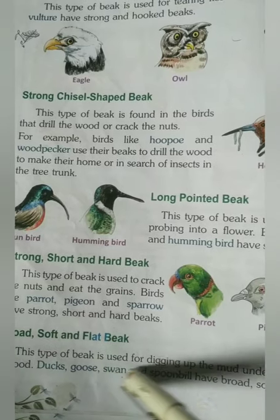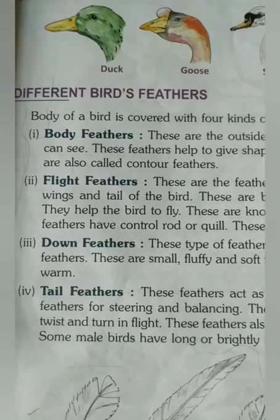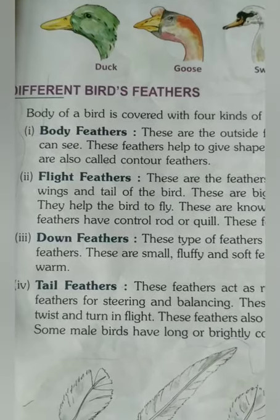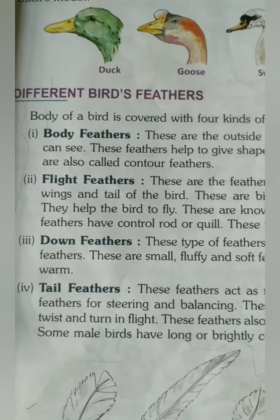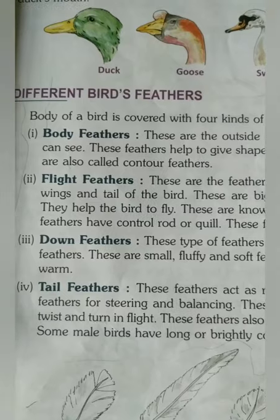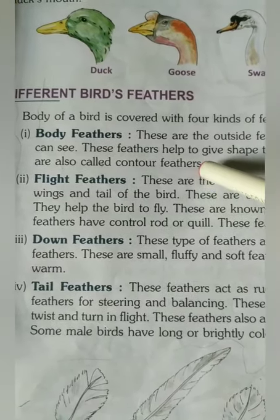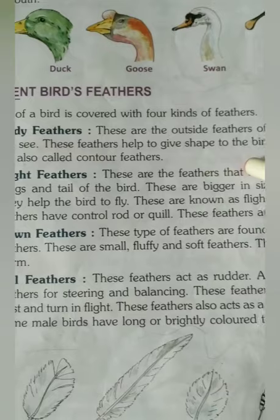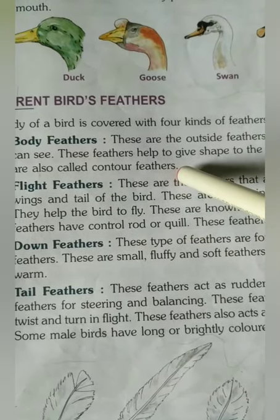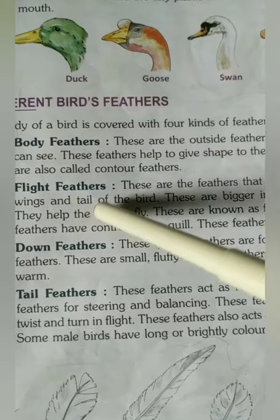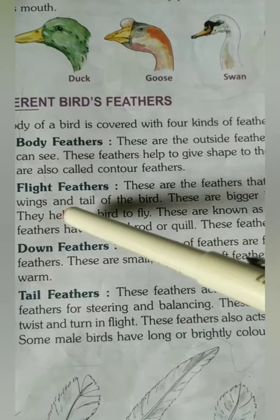Now, different types of bird feathers. The first one is body feathers. Body feathers are the feathers found on the body, and they give shape to the bird's body. These are also called contour feathers.